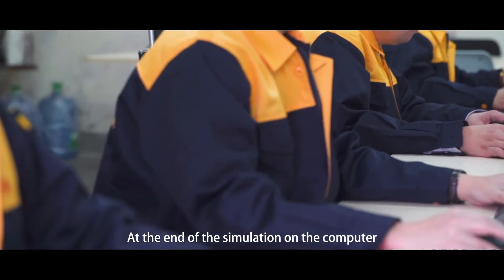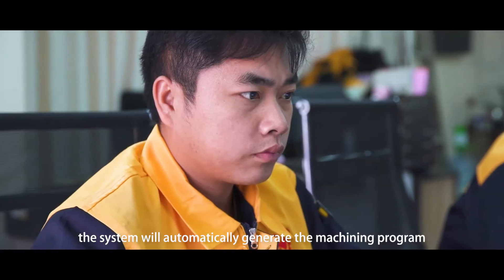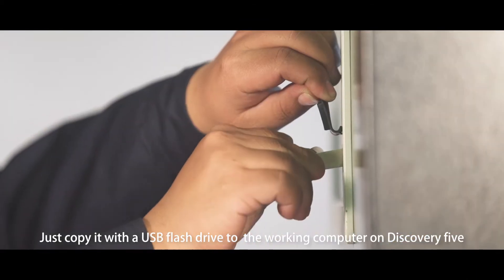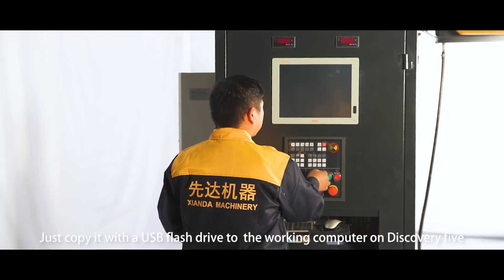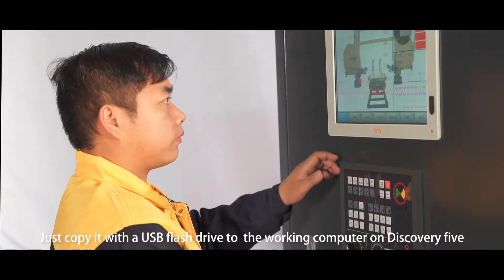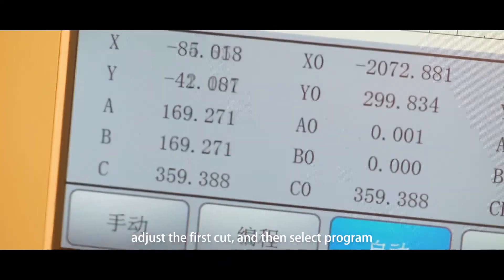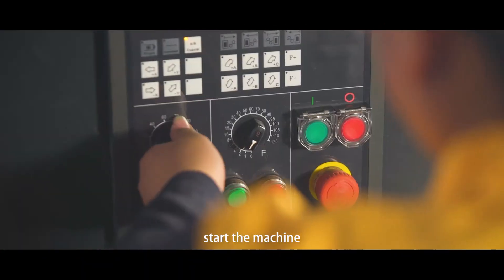At the end of the simulation on the computer, the system will automatically generate the machining program. Just copy it with a USB flash drive to the working computer on Discovery 5. Place and adjust the block, adjust the first card, then select program and start the machine.